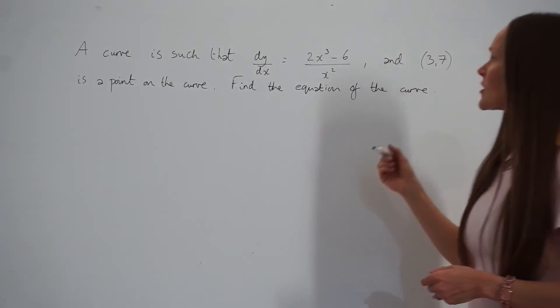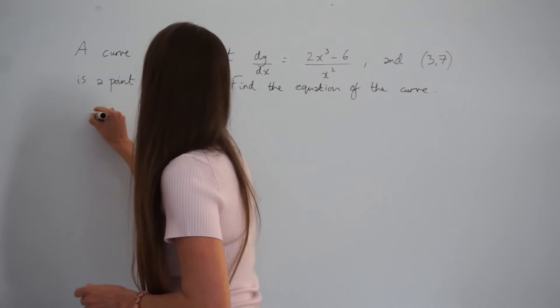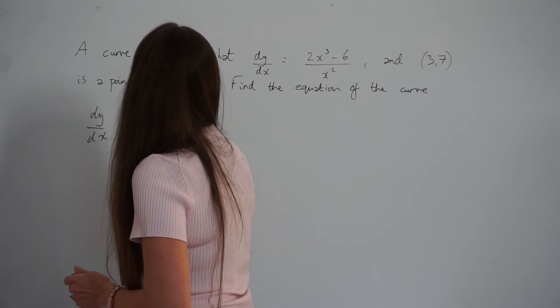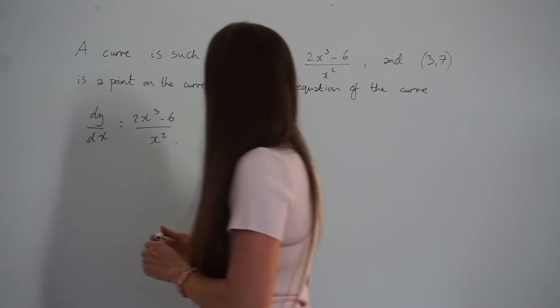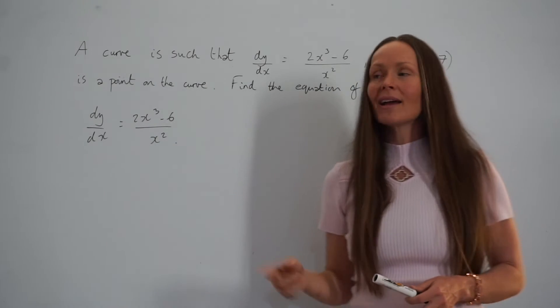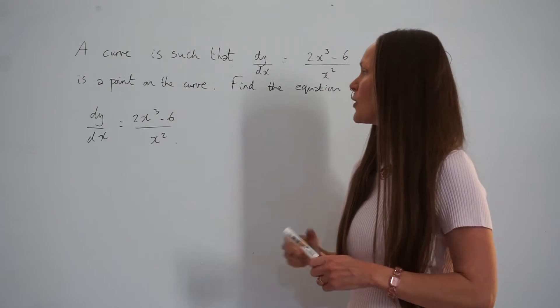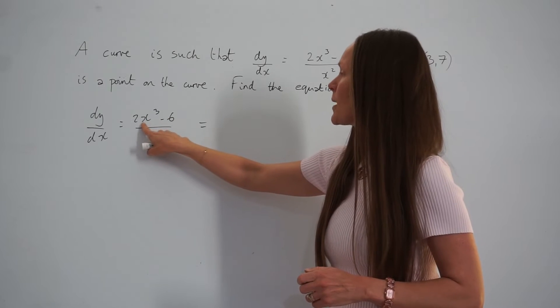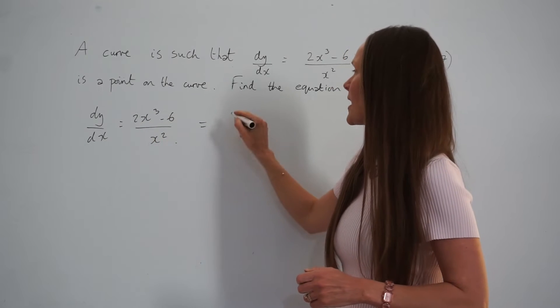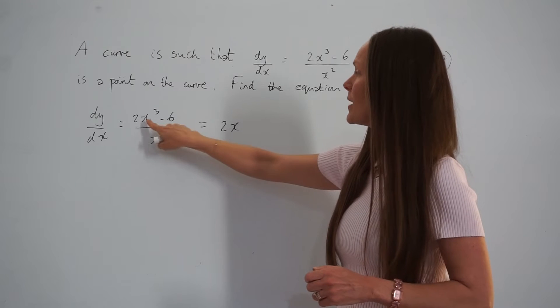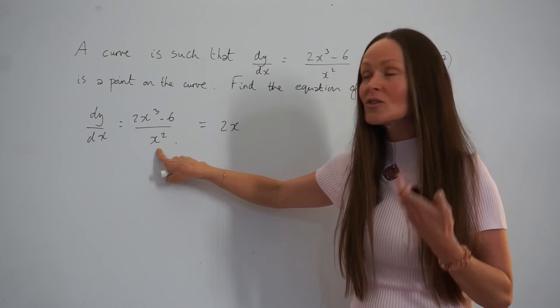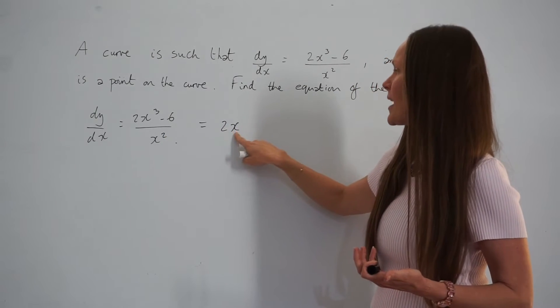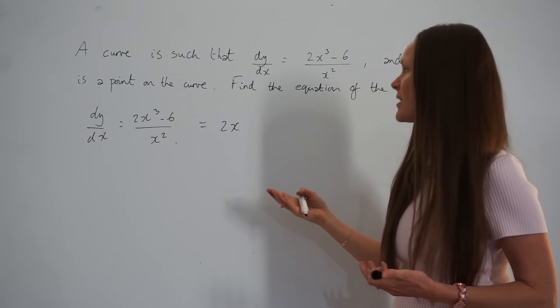I'm going to start by writing down dy/dx. So dy/dx equals 2x³ minus 6 over x². Before I integrate, I'm going to rewrite this in its power form. If I simplify these terms, 2x³ divided by x² is 2x. Remember when you divide x terms, you're subtracting the powers. So 3 minus 2 is 1, so 2x to the power 1 is just 2x.